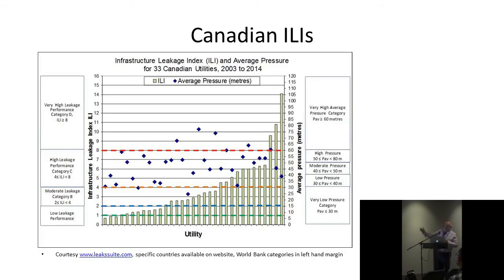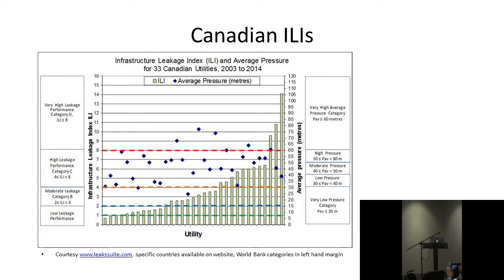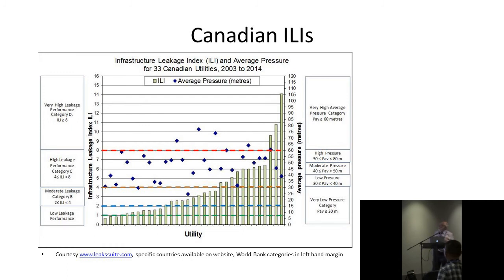Looking at Canadian ILIs, some are below one, but some reach around 14. There are also World Bank bands which give a feeling for performance based on ILI. For a developed country, an ILI between 8 and 16 is considered very high leakage — the World Bank says you should do something about it.